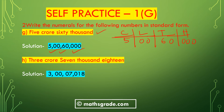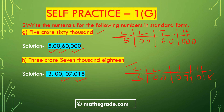Part (h): 3 crore 7018. In the crore place we have single digit 3. In the lakh place there are no digits so we place 00. In the thousand place we have 7,000, a single digit 7, so we write 07. In the hundred place we have 18, that is 018. So the number is 3,00,07,018 — 3 crore 7018.